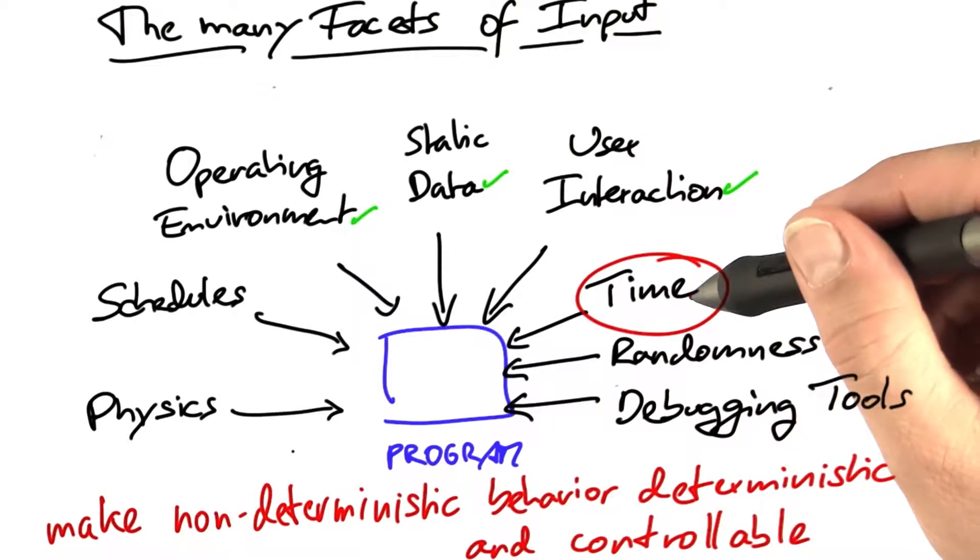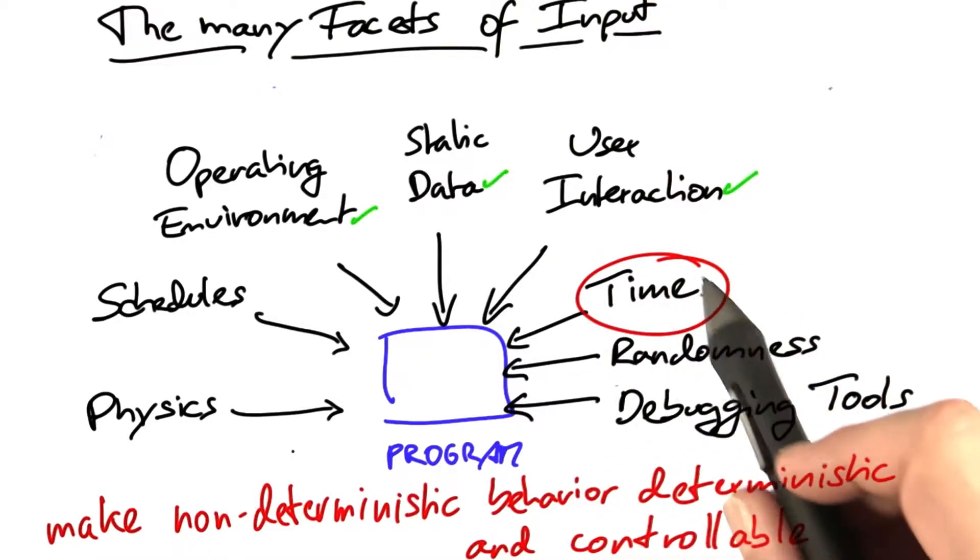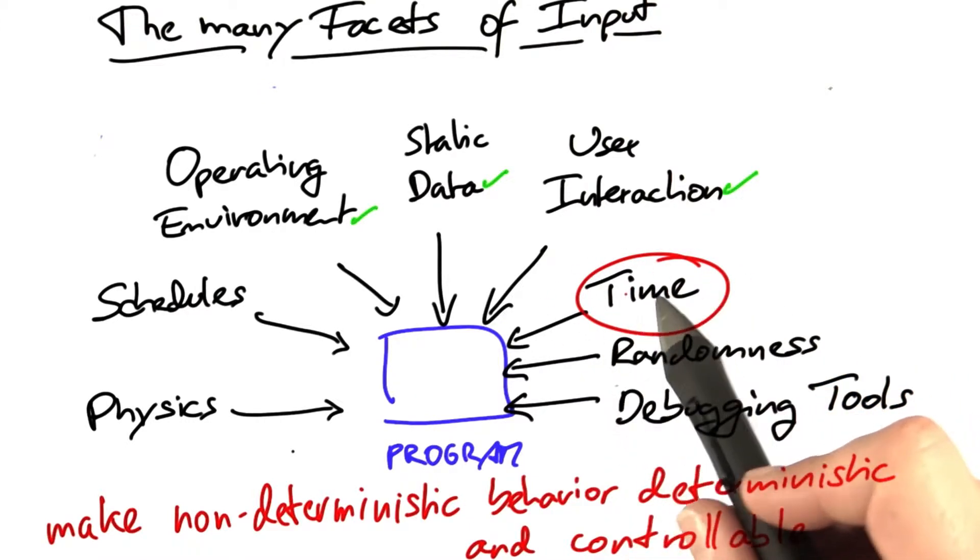First, time. If your program depends on real dates and times, be sure to provide a means to set these for diagnostic purposes. If it depends on real timing, make these limits controllable as well.